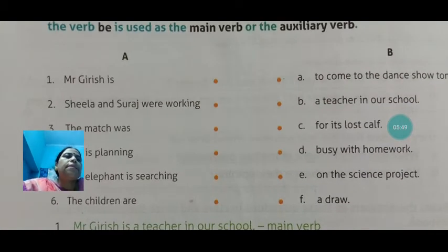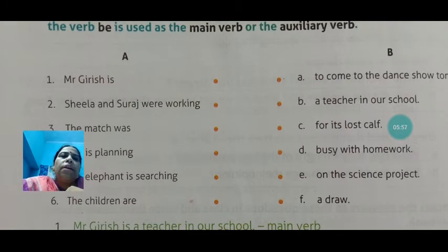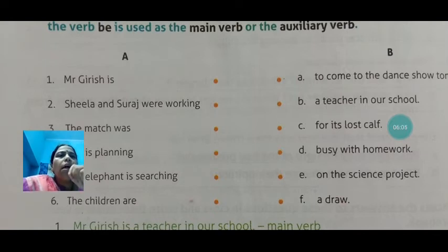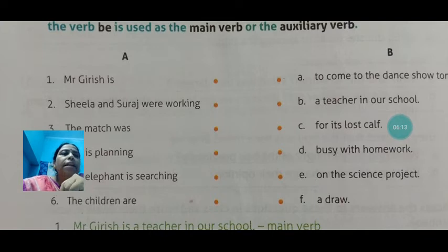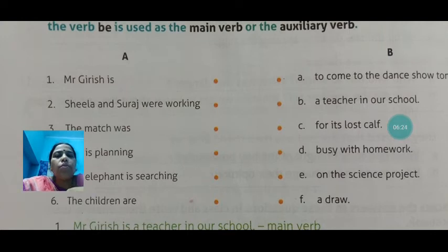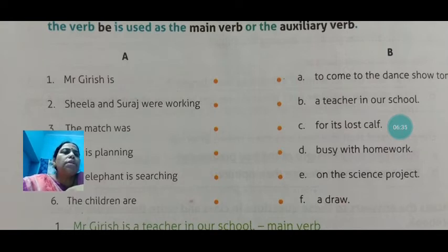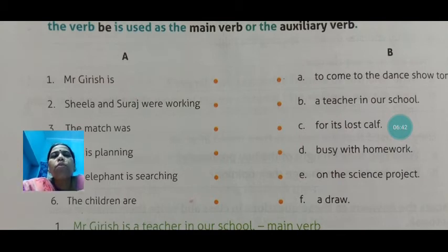For example: 'Mr. Grish is a teacher in our school.' The verb 'be' here is 'is,' and it is used as a main verb because there is no other verb it is helping. Next: 'Sheila and Suraj were working on the science project' — the verb 'be' is 'were,' and it is used as the auxiliary verb because it is helping the main verb 'working.'